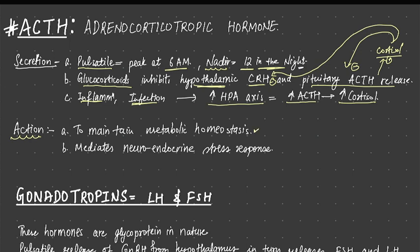Whenever the body is in stress or in danger, cortisol is always released. Cortisol increases the glucose levels in the blood so that the body is able to cope with the situation. So it maintains metabolic homeostasis. It also mediates the neuroendocrine stress response. This is all about a few things about ACTH, which are necessary to understand subsequent endocrinology.